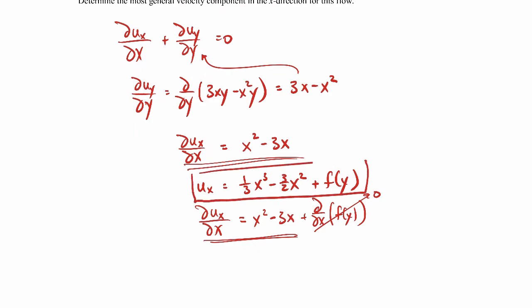So this is our most general expression for the x velocity for this two-dimensional incompressible flow field. And we found it through the continuity equation. If we were to go further in this problem, in order to find out what that function of y is, we'd have to be given some additional information. We'd have to know something perhaps about boundary conditions or something like that. In other words, we just need more information if we were going to figure out what the function of y is. Okay, we'll go ahead and end the example there.